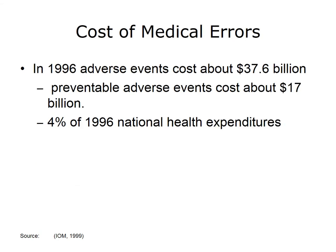Aside from the harm that can come to patients, medical errors and poor quality care have significant financial implications. The To Err is Human report estimated that, at the time, national costs of adverse events were around $38 billion, and preventable adverse events were about $17 billion. This was about 4% of national health expenditures in 1996. The recognition of the amount of money being spent, while quality was still suboptimal, led to more interest in new models of care that could address both quality and cost.